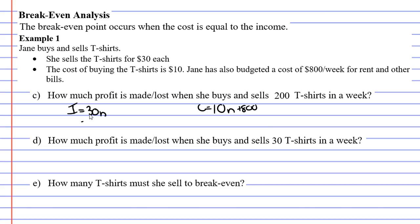So if I sell 200 t-shirts for the income, I'm going to go 30 times 200. And this will come to $6,000. That's how much income I'll get from selling 200 t-shirts. Let's now look at the cost. First, we're going to go 10 times N. We've sold 200. So 10 times 200 plus 800. This will come out to $2,800.